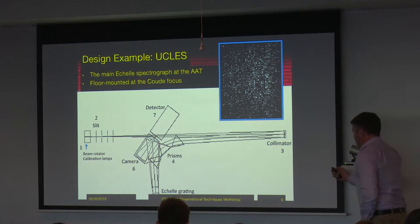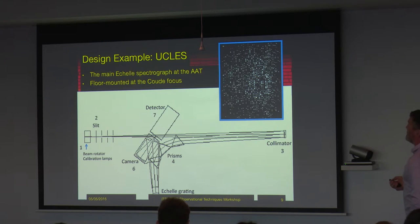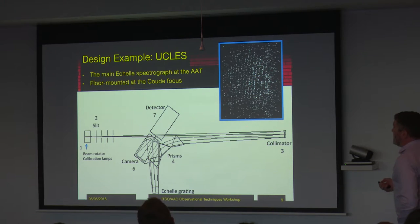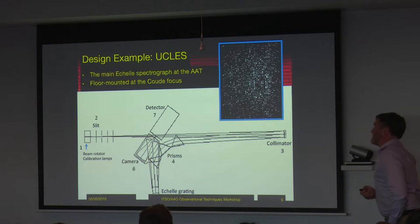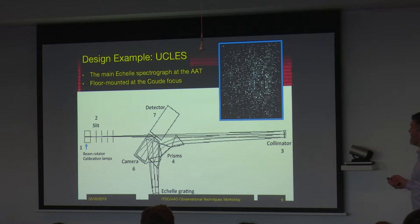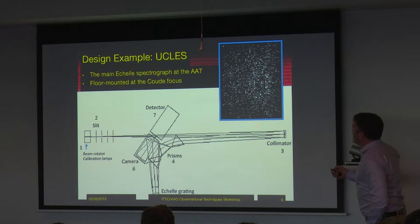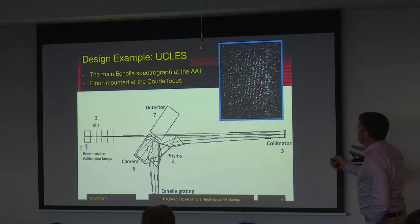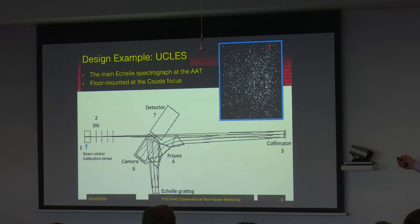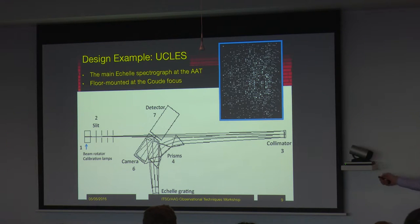An example of this is the veteran instrument UCLES at the AAT, which is still arguably the main echelle spectrograph of the AAT. It's floor-mounted at the Coudé focus. Here you see a spectrum from UCLES - this would be an emission line source - and you can see many, many orders here. In this case, it's being cross-dispersed, and each of these orders, which appear vertically here, is a different wavelength range.